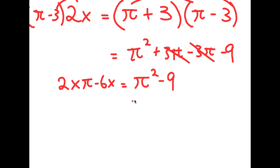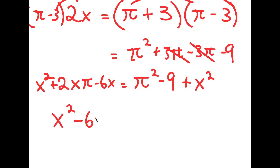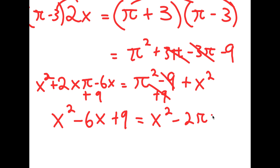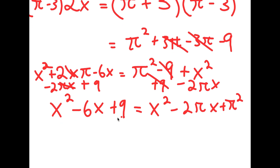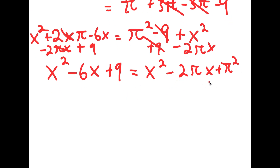From here, I'm going to add x squared on both sides. So I have x squared plus 2x*pi minus 6x is equal to pi squared minus 9 plus x squared. Let me reorder this: I'm going to write this as x squared minus 6x plus 9 — so I add 9 on both sides — is equal to x squared minus 2*pi*x — subtracting 2*pi*x on both sides — plus pi squared.